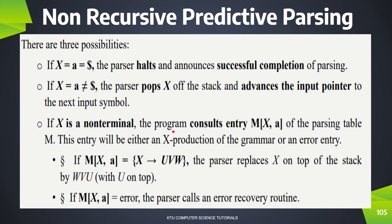Now we have three possibilities in the parsing table. First case: we stop when the Input Buffer and stack top both have $, and stop processing. Second case: we stop when the Input Buffer and stack top have the same terminal symbol and pop it. Third case: if x is a non-terminal, we use the parsing table. A blank entry is an error entry and the production is used to replace x on the stack.